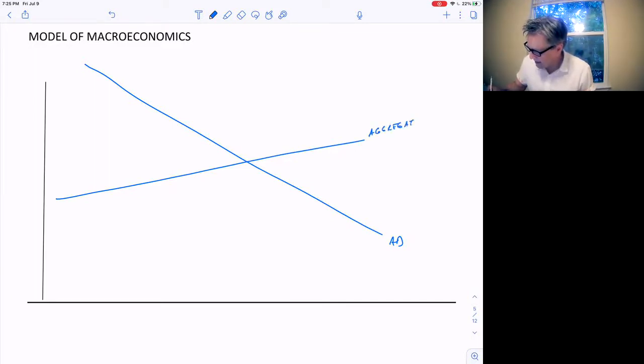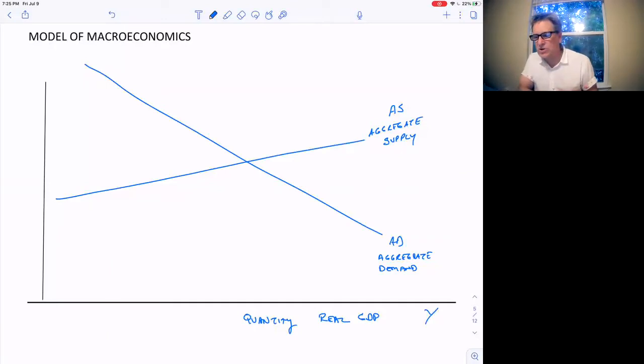So the supply of all goods and services in the economy. And the demand curve will be aggregate demand, the demand for everything in the economy. And I abbreviate aggregate as AG. On the horizontal axis is quantity. The total quantity demanded or produced in the economy, which is real GDP, which we symbolize as a big capital Y, which is also the symbol for income, because what we produce is also our income.